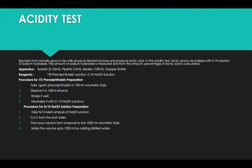Acidity test: bacteria that normally grow in raw milk ferment lactose and produce lactic acid. In an acidity test, the lactic acid is neutralized with 0.1 normal solution of sodium hydroxide. The amount of sodium hydroxide is measured, and from this amount the percentage of lactic acid is calculated. For this purpose we need a burette, a pipette of 10 ml, beaker of 100 ml, and a dropper bottle. Chemical reagents required are 1 percent phenolphthalein solution and 0.1 normal sodium hydroxide solution.